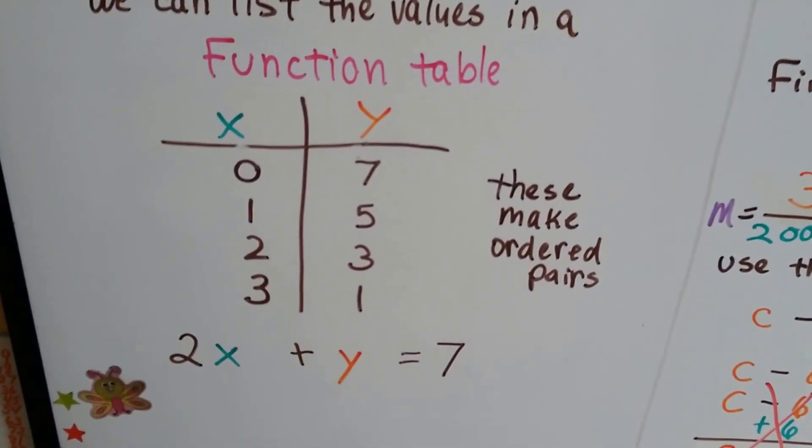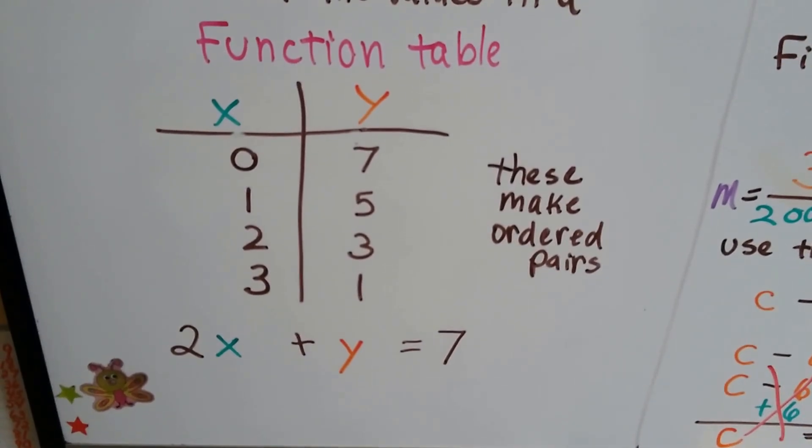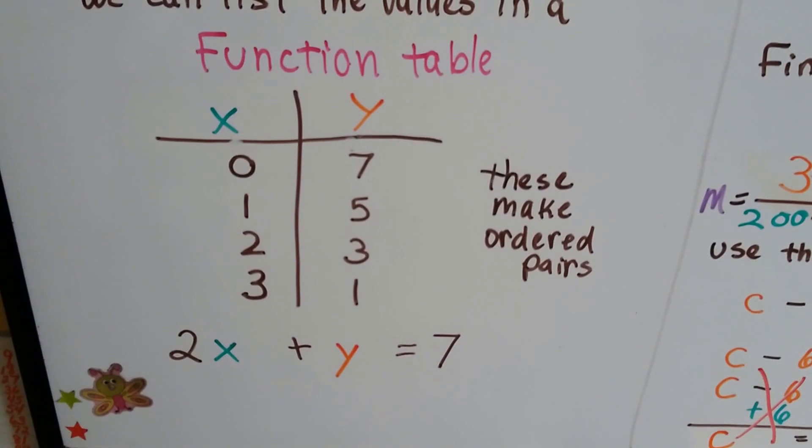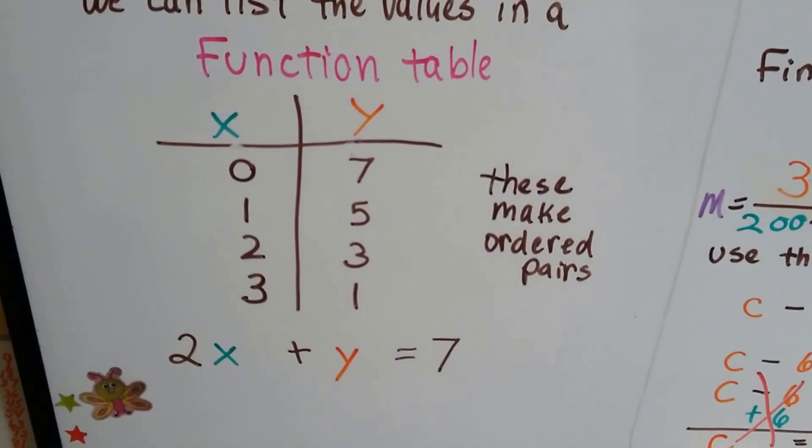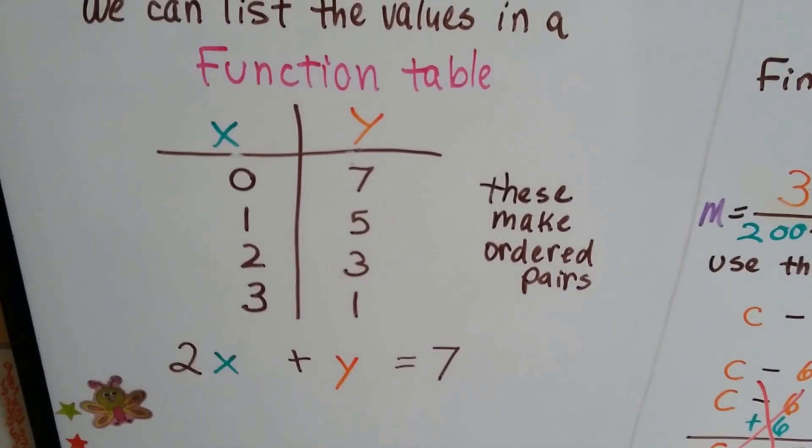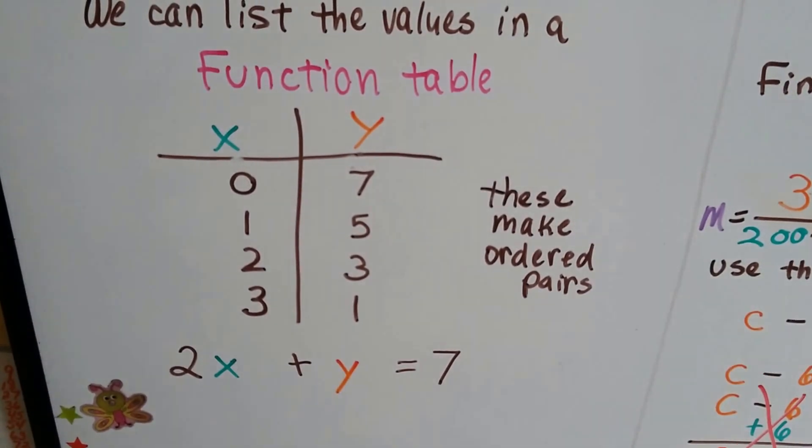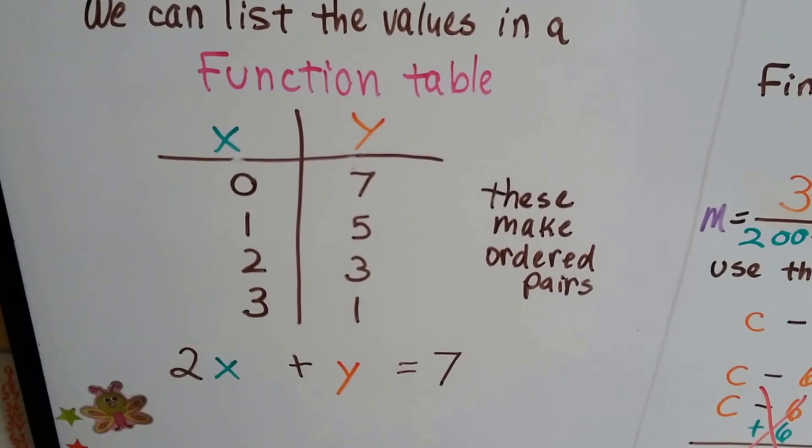So we've got this equation 2x plus y equals 7. Every single one of these x and y values will make this equation true, and they make ordered pairs. 0, 7 is an ordered pair. 1, 5 is an ordered pair. And if we use 0 for x, 2 times 0 is 0, and we use 7 for y, 0 plus 7 is 7. See? And they'll make it true.